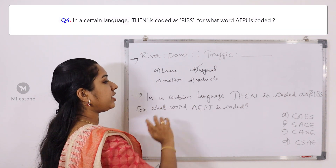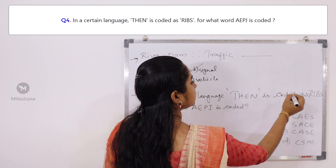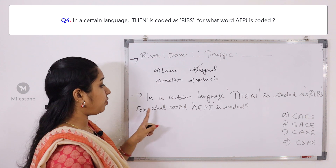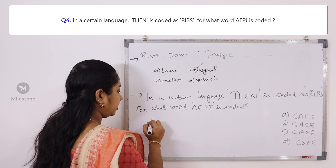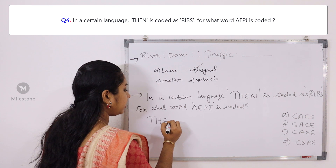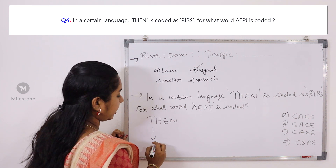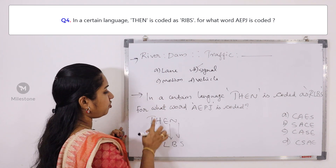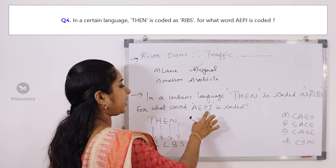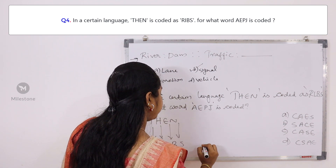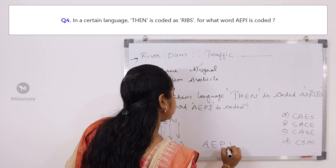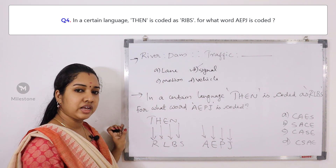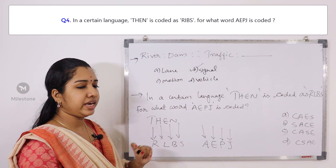In a certain language, THEN is called as RLBS. For what word is AEPJ called? In a language, THEN is called as RLBS, and it is called as RLBS. For what word is AEPJ? This is the question. Let's go and apply here.